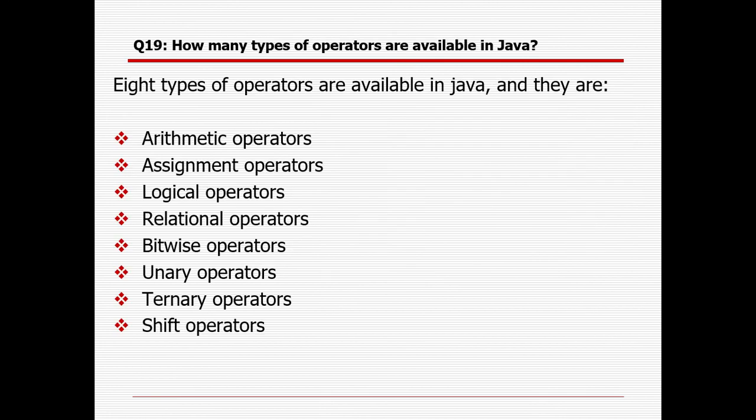How many types of operators are available in Java? Basically, there are eight types: arithmetic operator, assignment operator, logical operator, relational operator, bitwise operator, unary operator, ternary operator, and shift operator.